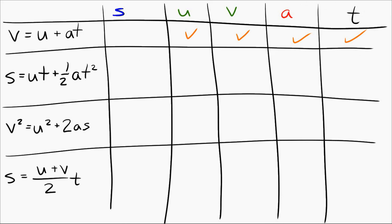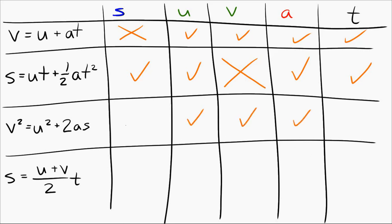So if your problem gives you displacement, or wants you to solve for displacement, the first equation is probably not the most direct path. In the second equation, we have displacement, initial velocity, time, and acceleration — we do not have final velocity. So the second equation would not be useful if you're trying to solve for final velocity, or if final velocity is given as known information.